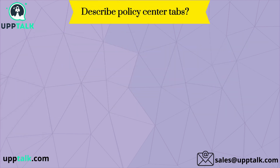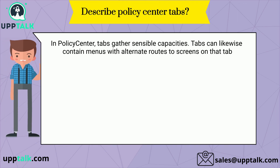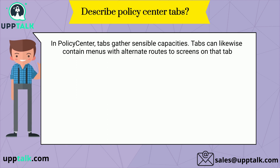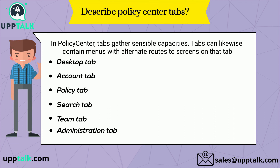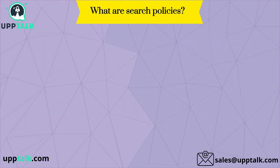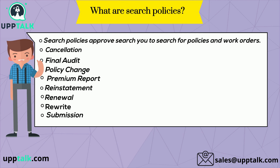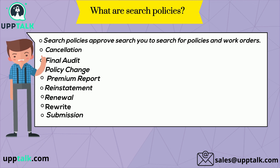Describing Policy Center tabs: in Policy Center, tabs organize logical functions and can contain menus with shortcuts to screens on that tab. Tabs include: Desktop, Account, Policy, Search, Team, and Administration. What are search policies? Search policies allow you to search for policies and work orders by type: Cancellation, Final Audit, Policy Change, Premium Report, Reinstatement, Renewal, Rewrite, and Submission.